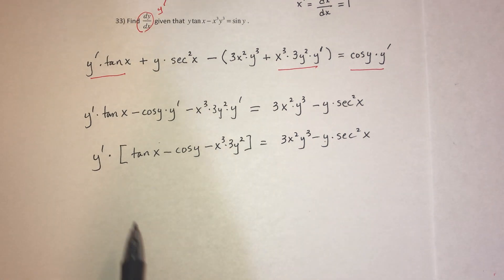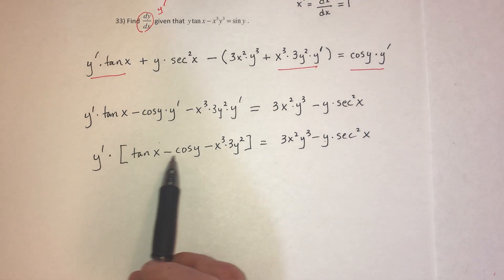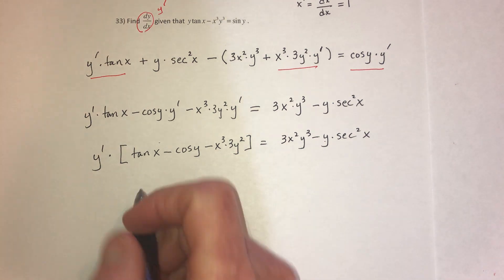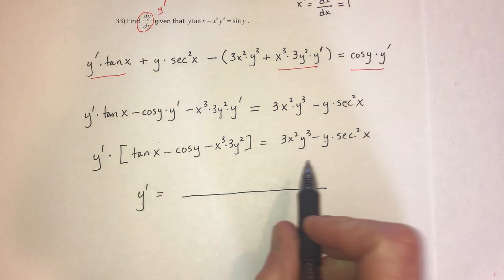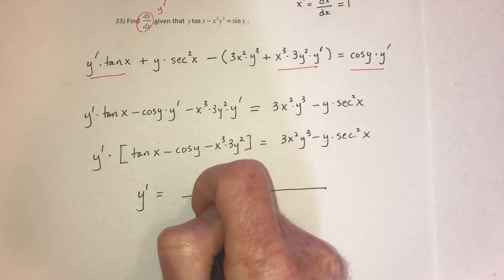And the last step is, to solve for y prime, just divide both sides by this. So it's going to say y prime equals the numerator. Just copy and paste it.